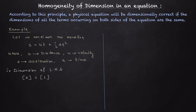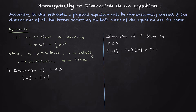Now let's find the dimension of the first term on the right-hand side, which is ut — velocity times time. The dimension of ut equals the dimension of u times the dimension of t. The dimension of velocity is LT⁻¹ and the dimension of time is T. Collecting similar quantities: LT^(−1+1) = LT⁰ = L. So the dimension of ut is L.